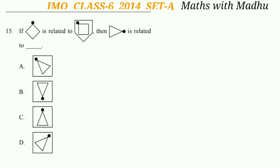Question 15: If this figure is related to that figure, then this figure is related to which option? In the first pair, the inner figure has four sides and becomes the inner figure of a five-sided outer shape, rotated 45 degrees anticlockwise. Applying the same rule to the third figure, the answer is option D.